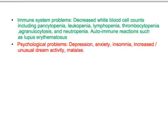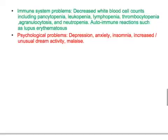Immune system problems include decreased white blood counts, including pancytopenia, leukopenia, lymphopenia, thrombocytopenia, agranulocytosis, and neutropenia, as well as autoimmune reactions such as lupus erythematosus. Psychological problems include depression, anxiety, insomnia, increased or unusual dream activity, and malaise.